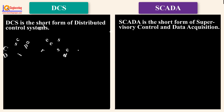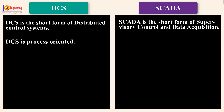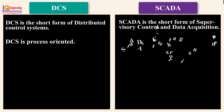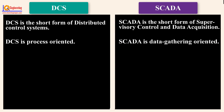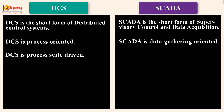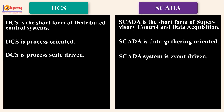DCS is process-oriented, while SCADA is data-gathering oriented. DCS is process-state driven, while a SCADA system is event driven.